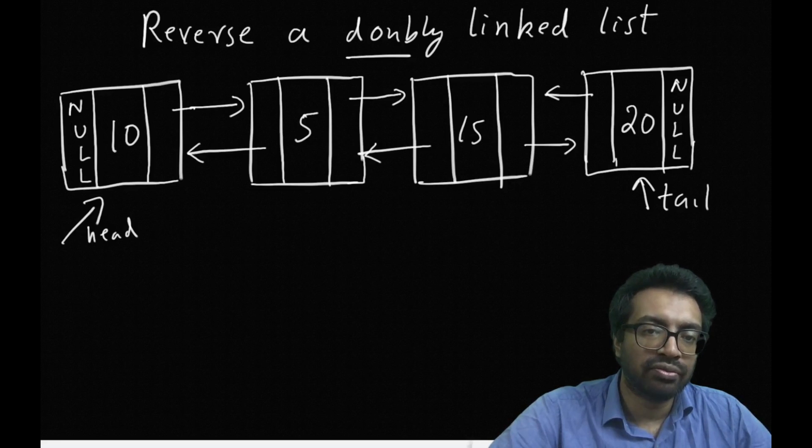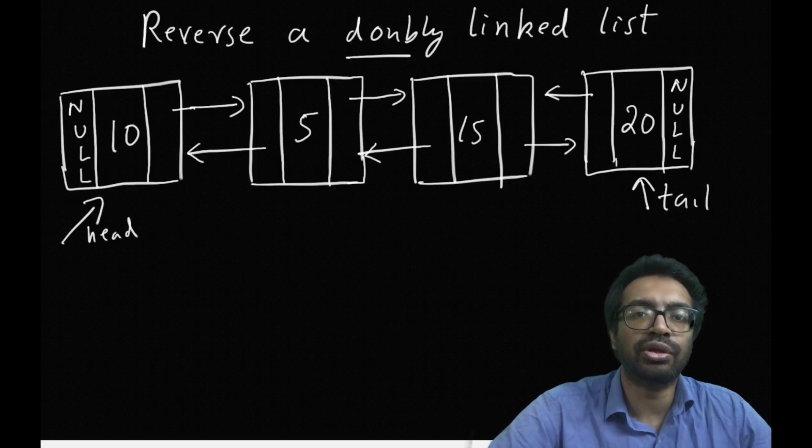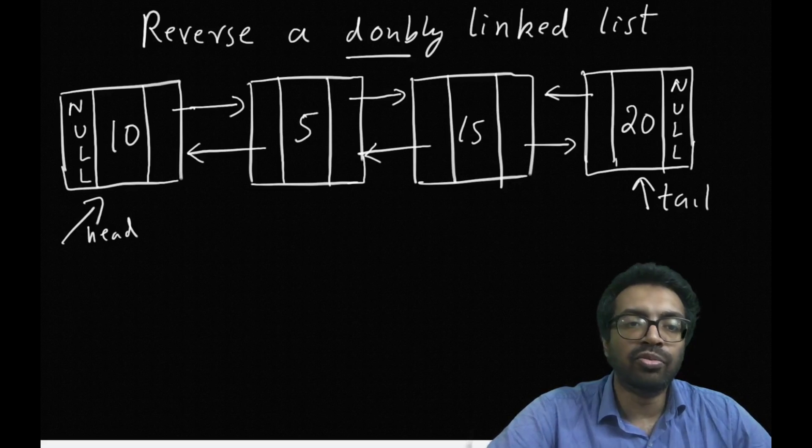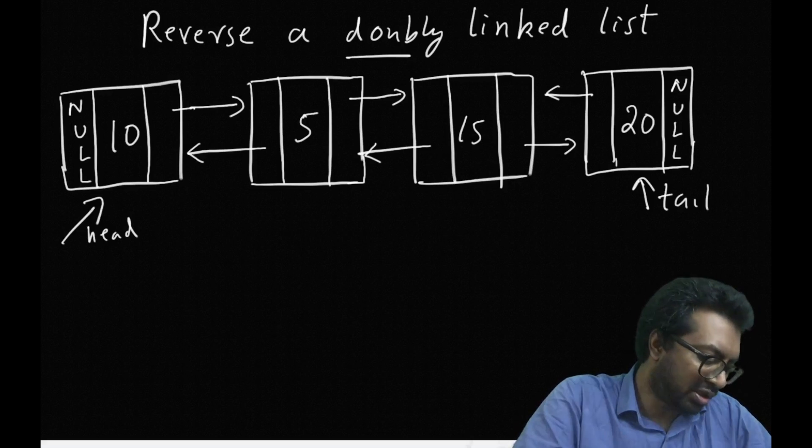What we do is the following: we are going to first remove the front element from 10 and add it into a new list. Remove front and add front to a new list. Let me explain it.